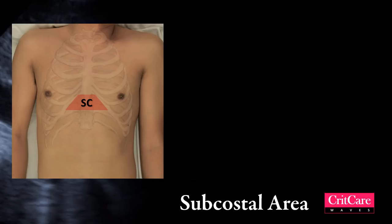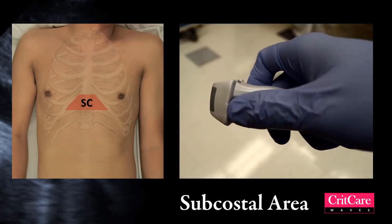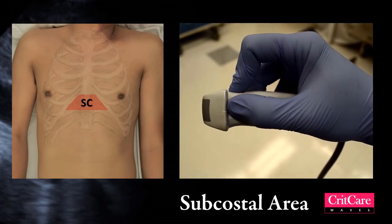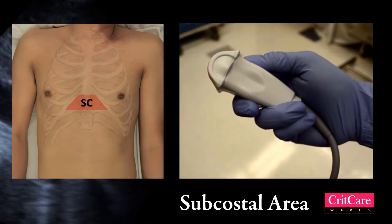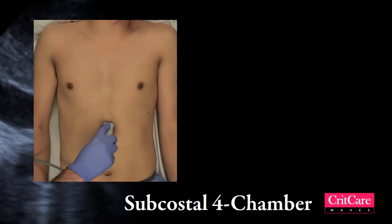To obtain the subcostal 4-chamber view, holding the probe in a different configuration improves image acquisition. Hold the probe so that your hand is mounted on the probe. The tail of the probe will be in your palm as shown. Use your index finger to stabilize the tip of the probe. Place the probe in the subcostal area with the marker oriented towards the left, or 3 o'clock.